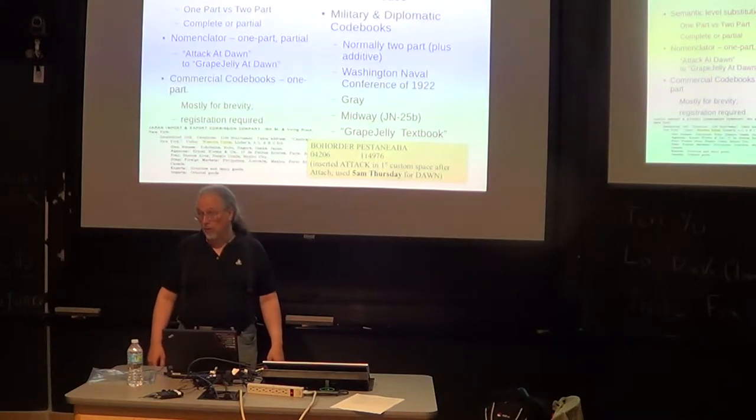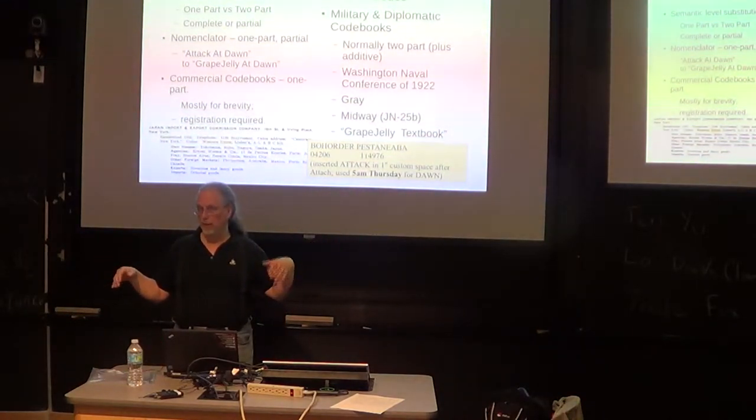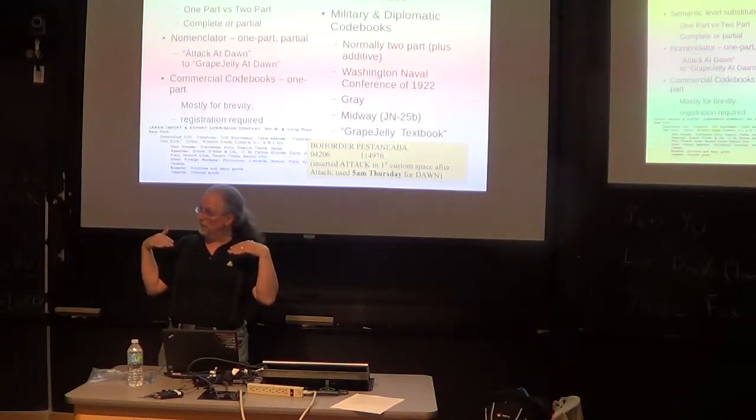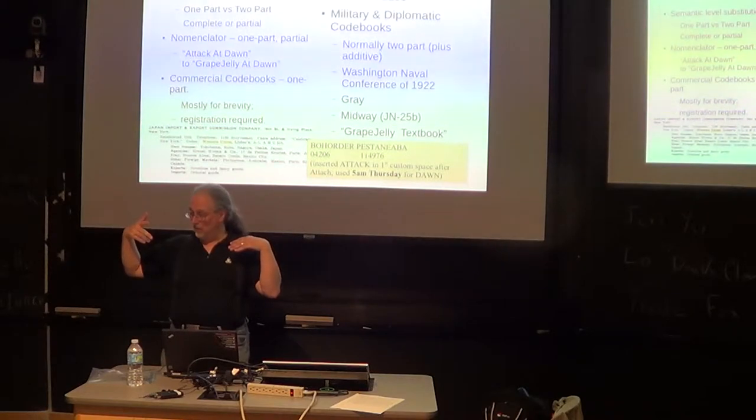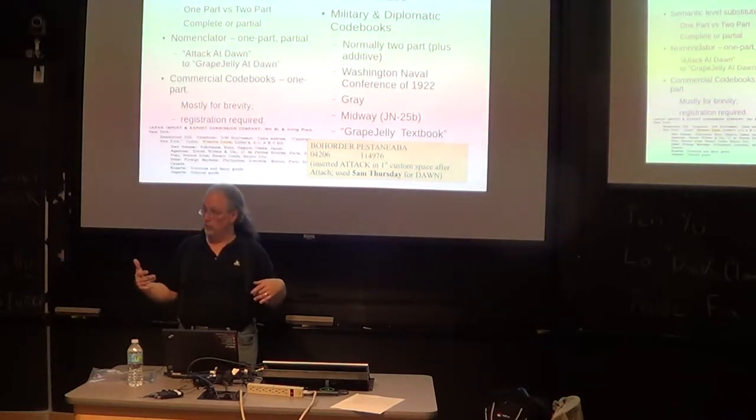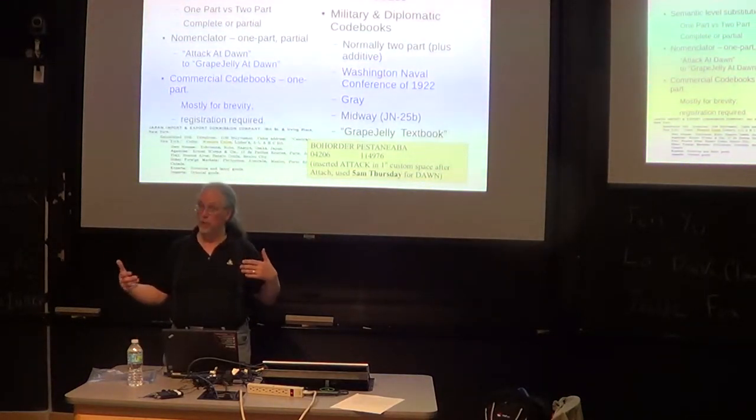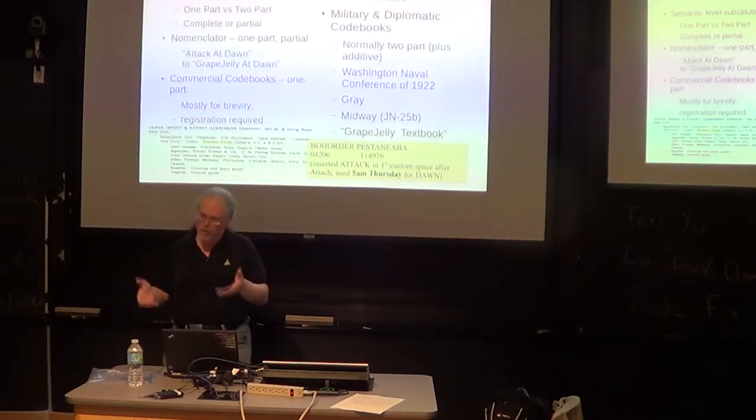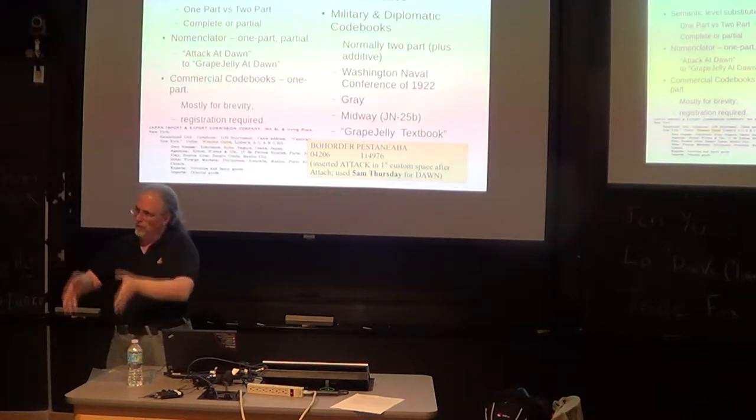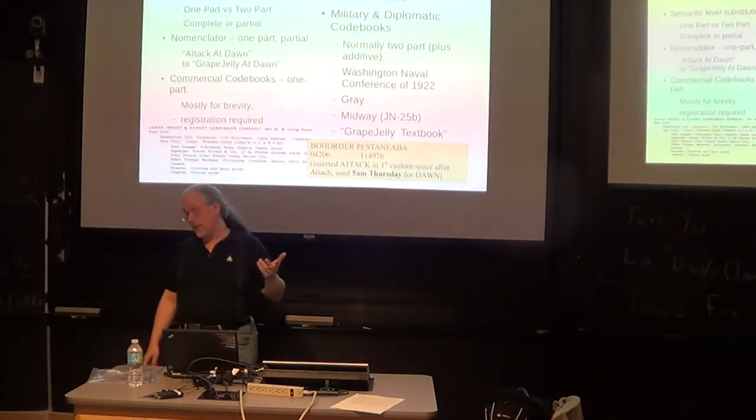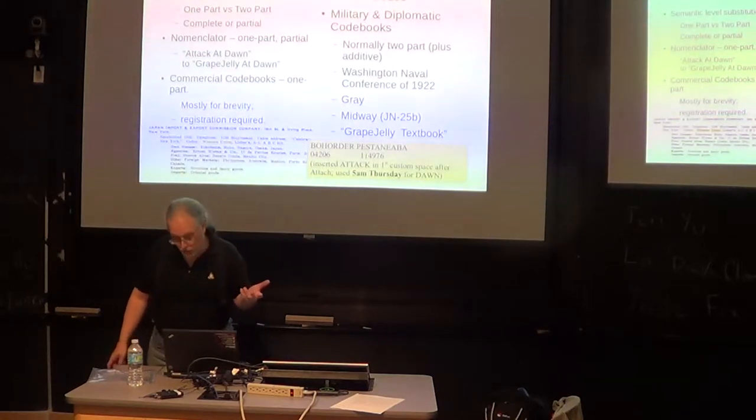Military code books tend to be two volume code books or two part codes. Instead of having the code words and the replacements in the same alphabetical sequence, which makes it much easier for the code breaker. They know that attack is going to fall between access and baluchistan in your code book. So a really professional code book randomizes the assignment of code words to regular words. And then you need a two part English-French-French-English dictionary to look them up.